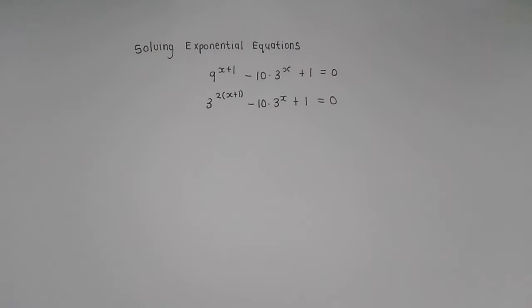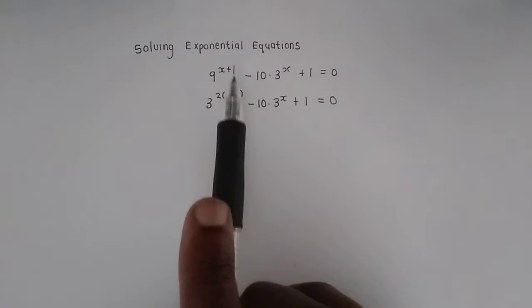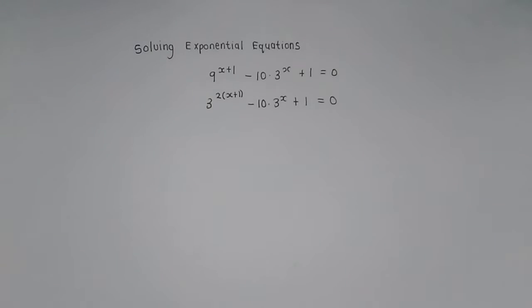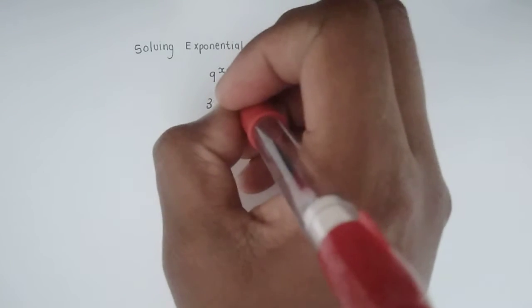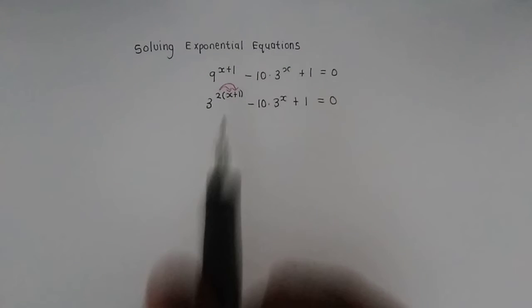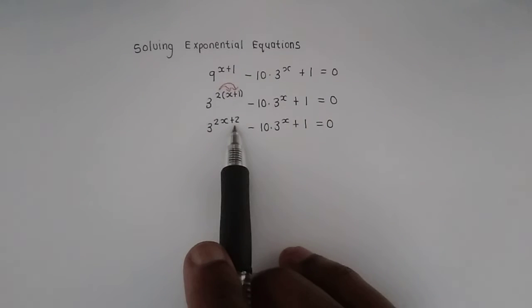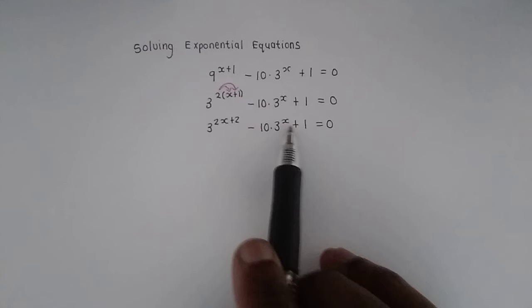That is then going to change this equation to look like this. But be careful now, that original exponent was algebraic. It was the exponent x plus 1. So we need to use brackets around that exponent because what you need to do now is distribute this 2 to both the terms that are involved in that original exponent. So there we go. We now have the equation 3 to the exponent 2x plus 2 minus 10 times 3 to the exponent of x plus 1.